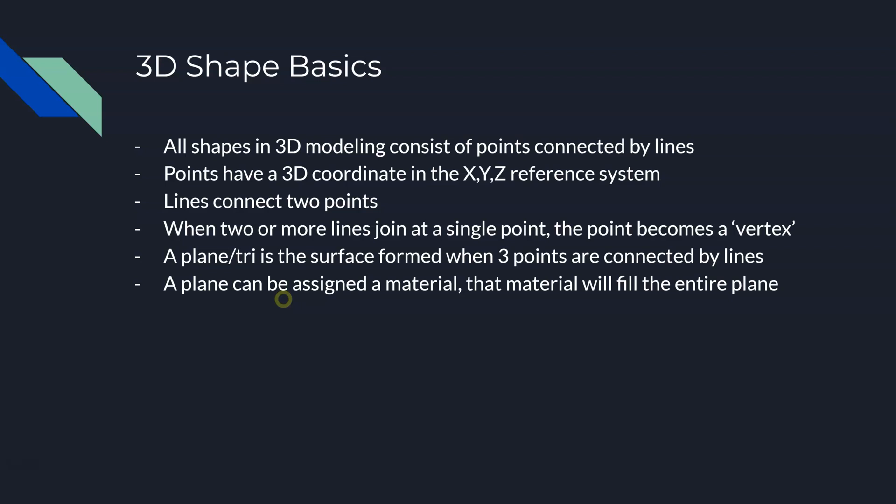That plane can be assigned a material, and that material will fill up that entire triangle — that entire plane. It might be as simple as putting a green material on there, or a material that looks gray, or you could assign a material with texture so it looks like grass or sand. The important thing to understand is that when you assign a material to a tri or a plane, it fills that entire thing, and it becomes a hard edge on the outside.